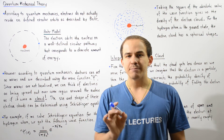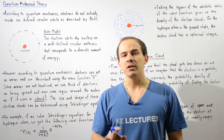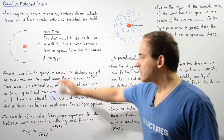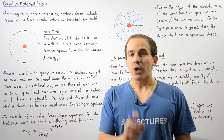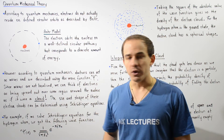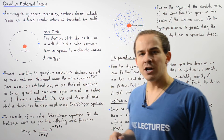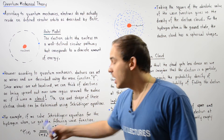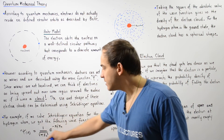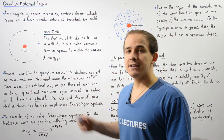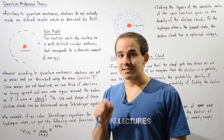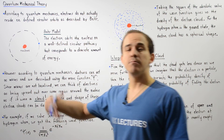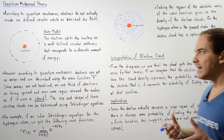The size and three-dimensional shape of these electron clouds can be obtained using Schrödinger's equation. For example, if we solve Schrödinger's equation for the ground state of the hydrogen atom, we get the following wave function: ψ(x) equals one divided by the square root of π multiplied by x₀ to the power of three, multiplied by e to the power of negative x divided by x₀, where x₀ is simply the Bohr radius. We'll examine this equation in more detail in a future lecture.